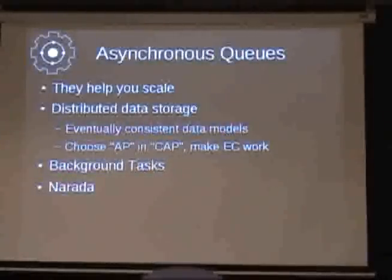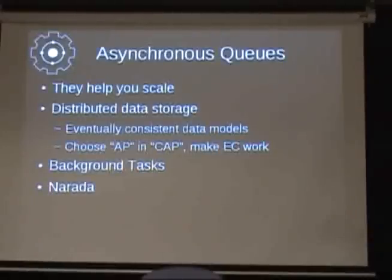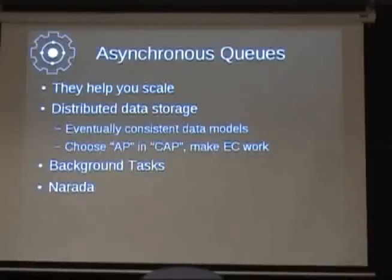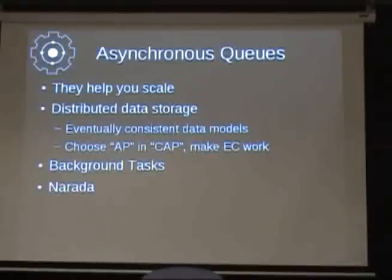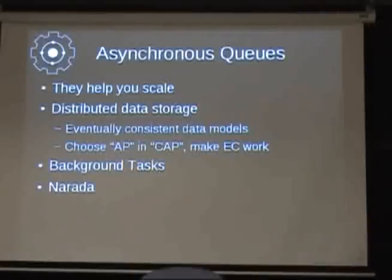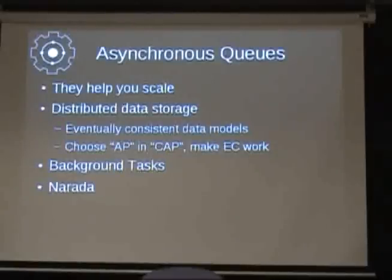The other big use people have found for Gearman is as an asynchronous queue. One of the most common examples: you want your website to send an email, or something like Twitter where you post to all your friends' feeds — you don't want that to block before you send a response back. You just dump it in a queue, make sure it gets run, and return to the user for a seamless interface. Gearman can act as that asynchronous queue. Asynchronous queues scale a lot better than mutexes — if you have a synchronous blocking operation or large transaction, that's not going to scale well. Pushing things asynchronously may be slightly delayed, but the user experience for the most part will be much better.